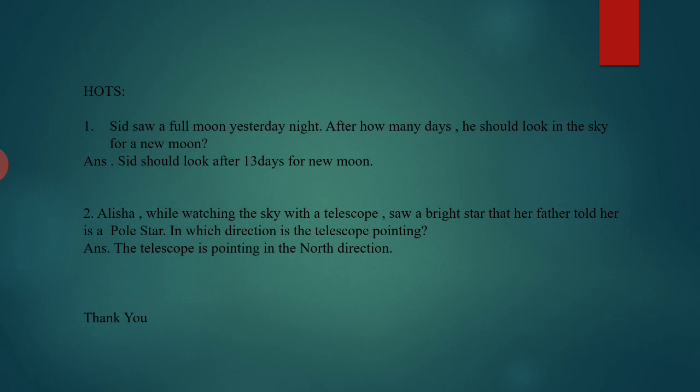HOTS Question 2: Alicia, while watching the sky with the telescope, saw a bright star that her father told her is a pole star. In which direction is the telescope pointing? The telescope is pointing in the north direction. Thank you children. Do write these questions in your classwork notebook.